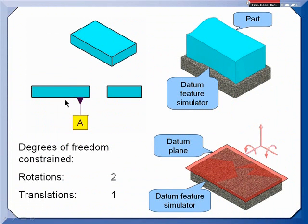Let's start with a plane. Here I've identified the lower surface of this part as datum feature A. The simulator might be something like a granite surface plate, and it's establishing a datum plane.